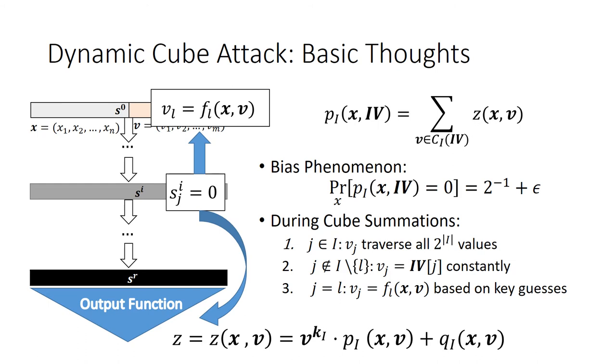The dynamic cube attack is based on the following observation. For a particular intermediate state bit Sij becomes a constant 0, the ANF of the output bit z will change significantly. Such an ANF change may be reflected by a particular non-random property called the bias phenomenon. For randomly chosen key x, the value of the superpoly Pi is more likely to be 0 rather than 1, indicating that the epsilon in the equation is larger than 0. The nullification of the crucial bit Sij is achieved by setting an IV bit VL, referred to as the dynamic IV, to a particular value, a function FL determined by the ANF of Sij. Therefore, during the cube summation, three kinds of IV bits are to be assigned in different manners. The cube IVs are still traversing opposite values. The constant IVs remain constants. The dynamic IVs are set afterwards according to the ANF of FL. Of course, the FL involves key bits so the whole process of the dynamic cube attack can also be divided into offline and online phases.